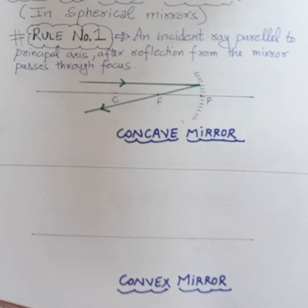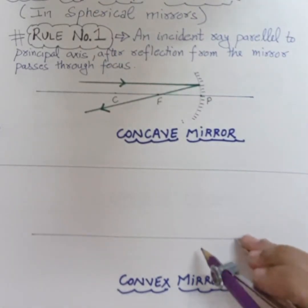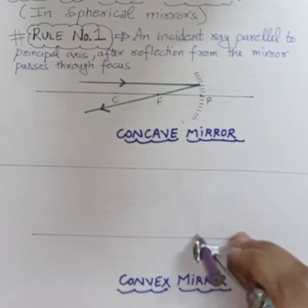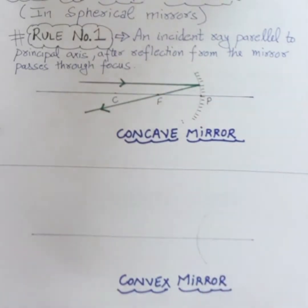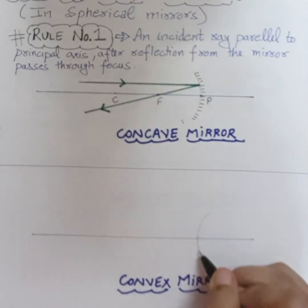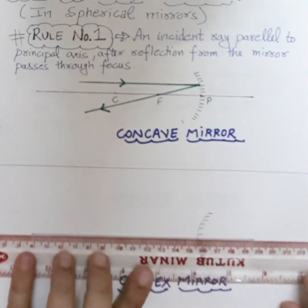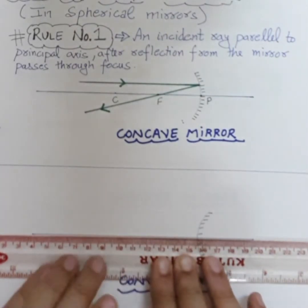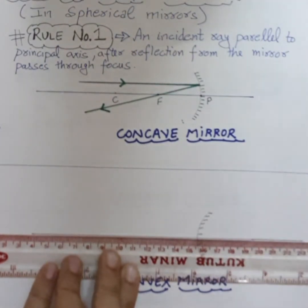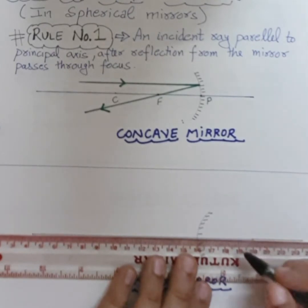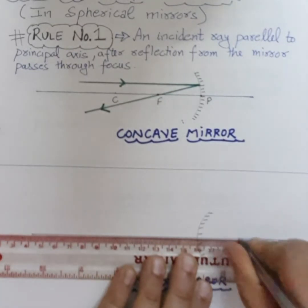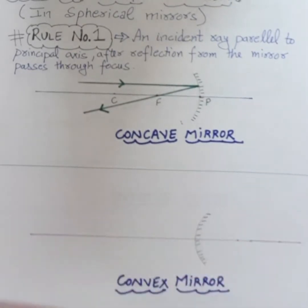Now we will draw the same for the convex mirror also. The principal axis we have already drawn. Now we will draw the convex mirror - this is a convex mirror, meaning this side is the reflecting side in front, and the back side is the polished side. Now measure again behind this pole - 3 centimetres behind gives us the first point, and 3 centimetres further we mark another point. So this first point is F, this was P, and this is C.